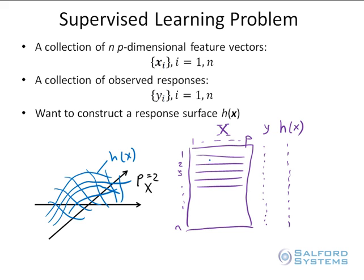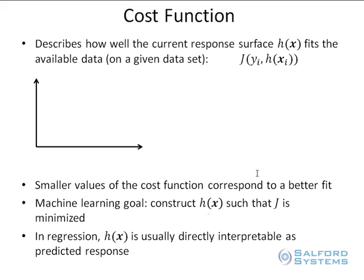Now, the next important question is, how do we solve supervised learning problem? How do we find the function h of x? And in order to do that, we need to introduce the next major component, and that is the subject of this entire set of videos. And it is called the cost function. So the cost function is a very important topic. The cost function, in general, describes how well the current response surface h of x fits the available data on a given data set. In abstract terms, you will talk about probability distributions, conditional distributions, and so on. But in concrete terms, you always have a data set, you have a set of observed responses, and you just want to come up with a measure of how well the response surface fits the available data.